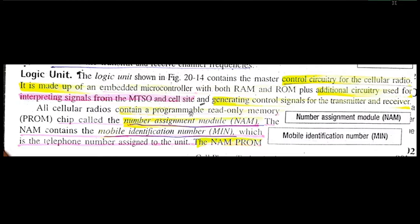All cellular radios contain a programmable read-only memory, that is a PROM. This PROM is burned when you purchase any mobile and switch it on. Your NAM — number assignment module — contains your MIN, that is the mobile identification number, which is registered with the prescribed MTSO computer. Your cell phone information will be permanently registered in the MTSO office.